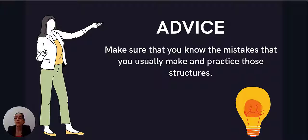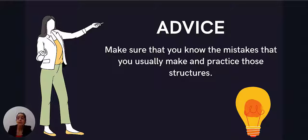Some people have problems with subject and verb agreement because they forget what the subject was. So you always have to go back and check what the subject is and make sure the agreement is correct. With a lot of practice, you can identify whether you're good at something or not. For example, with articles — when you make that clear, you can practice a lot. And for the test, you can make sure the sentence is completely error-free in that regard, and you become more conscious of it.